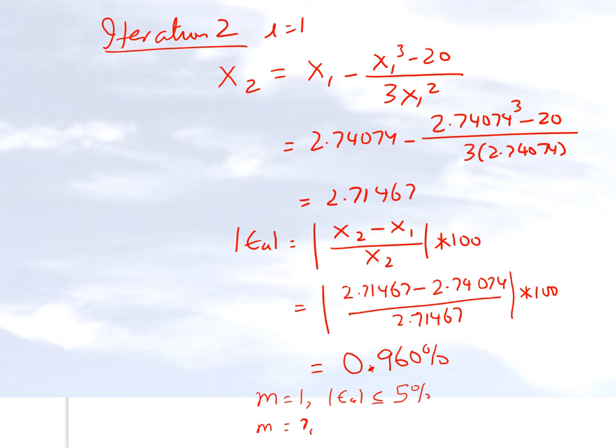When m is equal to 2, epsilon a has to be less than or equal to 0.5 percent. But that is not the case. So what we will find out is that based on this number right here, this implies that m is equal to 1, meaning we can be sure that at least one significant digit is correct in our solution.